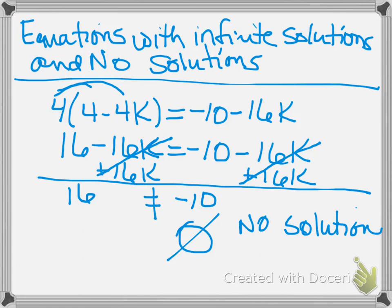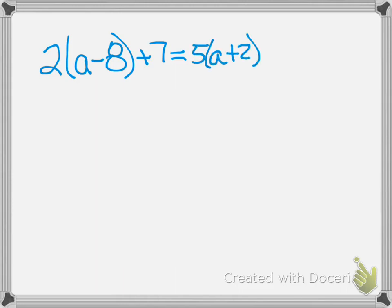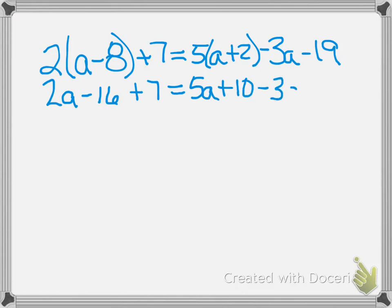Are there any questions about that example? Okay, so let's look at the next one. 2 times the quantity A minus 8 plus 7 equals 5 times the quantity A plus 2 minus 3A minus 19. We have to do a couple of distributives. On the left I would have 2A minus 16 plus 7. On the right I would have 5A plus 10 minus 3A minus 19.